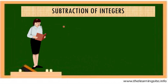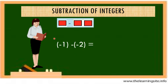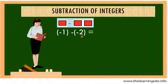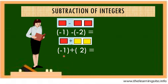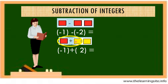For subtraction of integers: negative 1 minus negative 2 — the rule is to change the sign of the subtrahend. Our subtrahend is negative 2, and we proceed to addition. It becomes negative 1 plus positive 2. The subtraction becomes addition, and the result is positive 1.